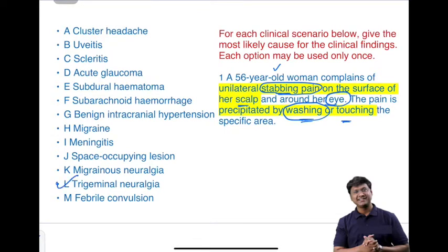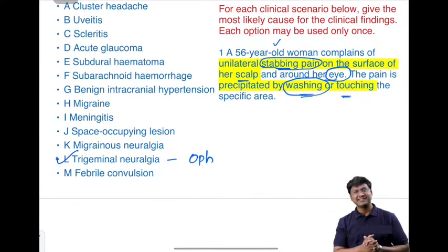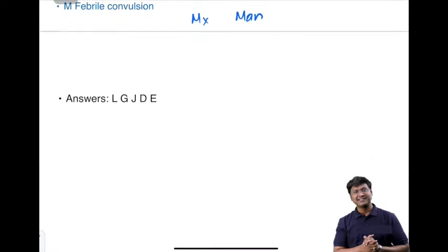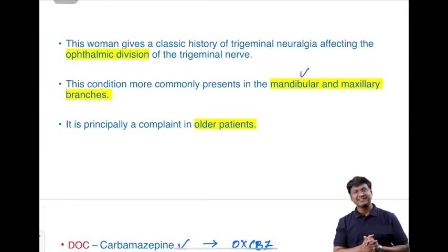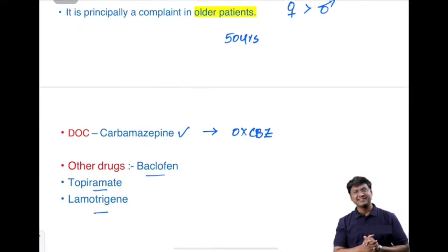Trigeminal neuralgia is due to compression of the trigeminal nerve root. The trigeminal nerve has three divisions: ophthalmic, maxillary, and mandibular. The pain is most commonly distributed in the mandibular and maxillary divisions. It is commonly seen in females rather than males, typically around 50 years of age.